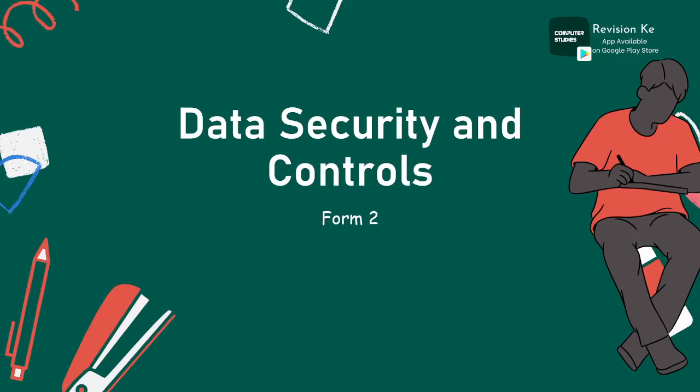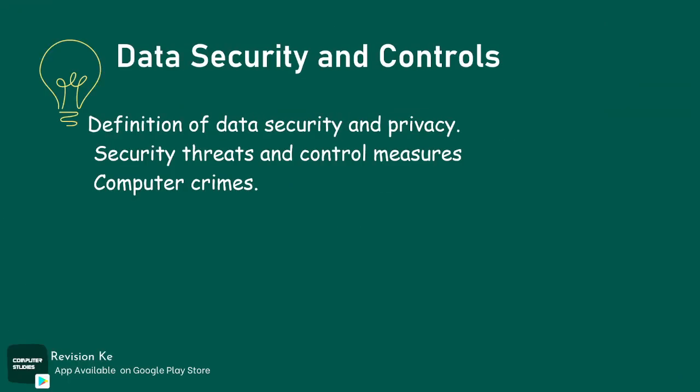The topic is data security and protocols. We need to define it, look at the security threats and control measures, and finally cover computer crime. The three objectives are: one, define the term data security and privacy; two, identify security threats on ICT and possible control measures; three, identify types of computer crimes and discuss laws governing protection of ICT systems. As of today in 2022, in Kenya there are either inadequate or no laws governing protection of ICT systems, so we'll just define and look at the stats.